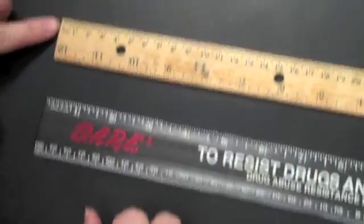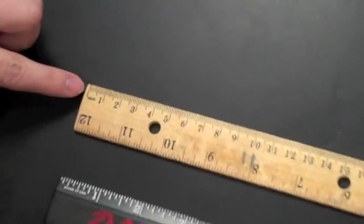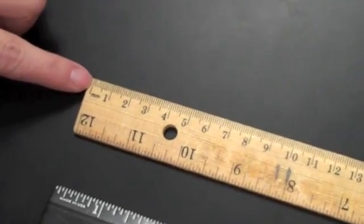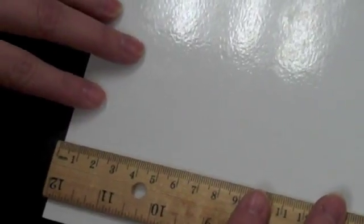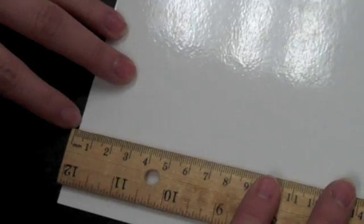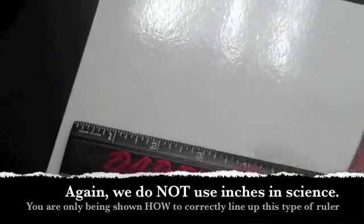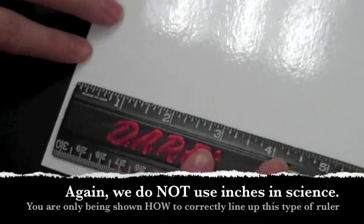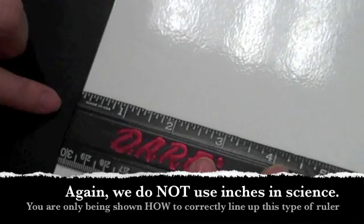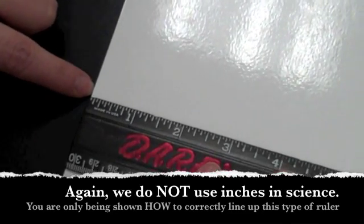This ruler does not start at the edge. This starts at the very first line here. So whenever you are measuring with this ruler, you will line up that very first line with the edge of whatever you are measuring. This ruler does not have that mark, so this starts at the edge of the ruler and you line that up with the object.